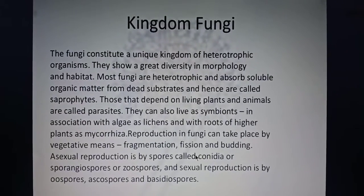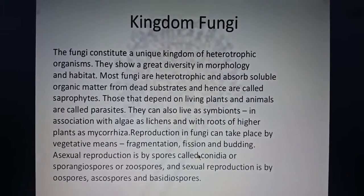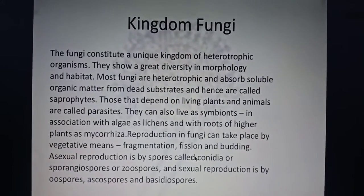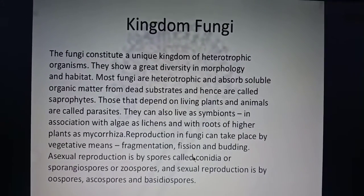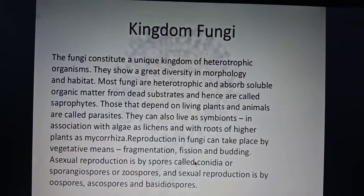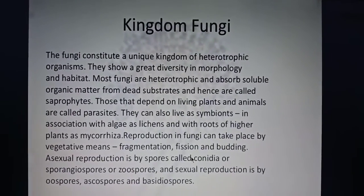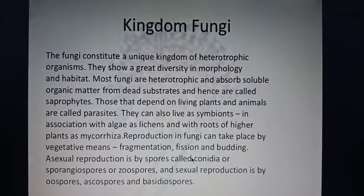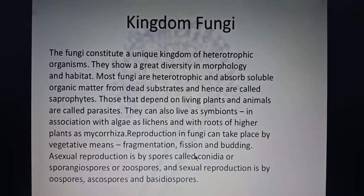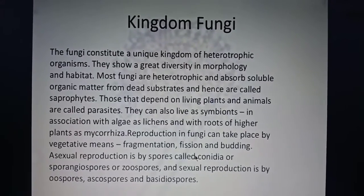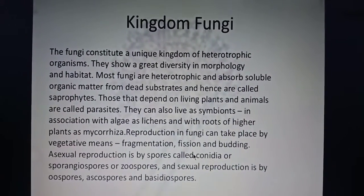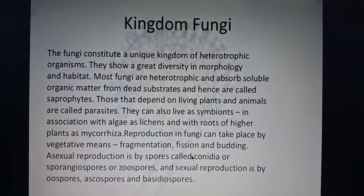In asexual reproduction, fruiting bodies are formed and filled with spores. These spores mature, burst, and disperse; wherever they fall, they form new hyphae. These asexual spores can be of many types: they can be known as conidia, sporangiospores, or zoospores — which will be discussed later in this chapter.